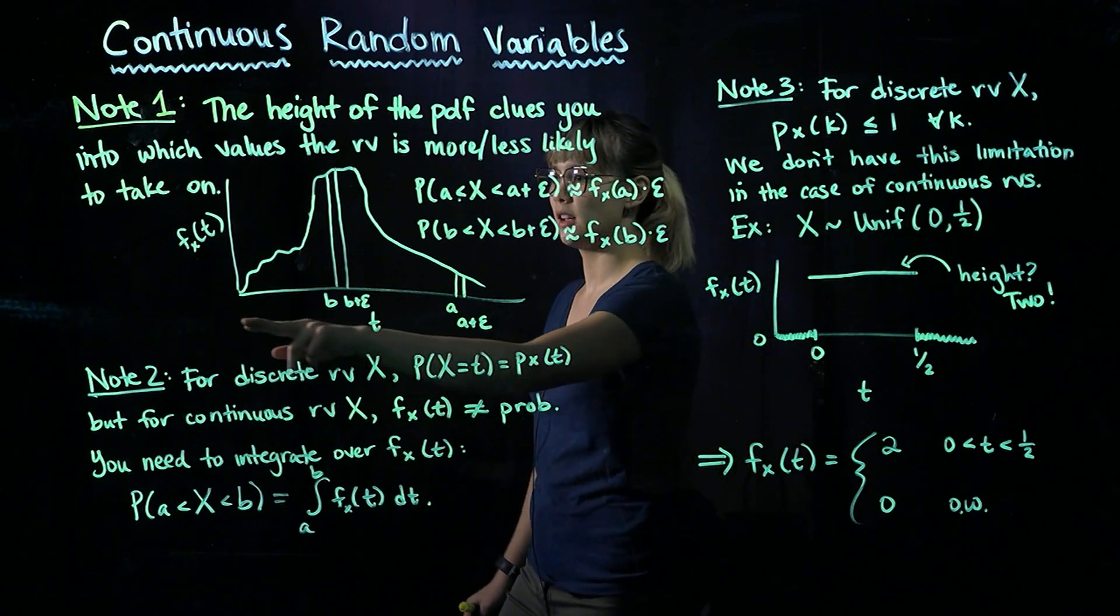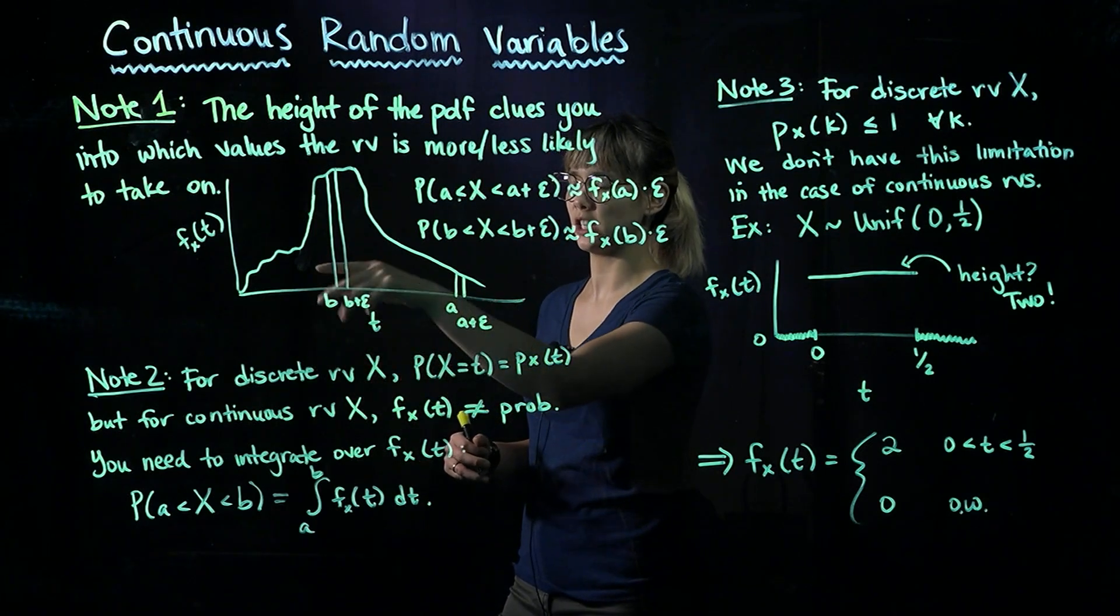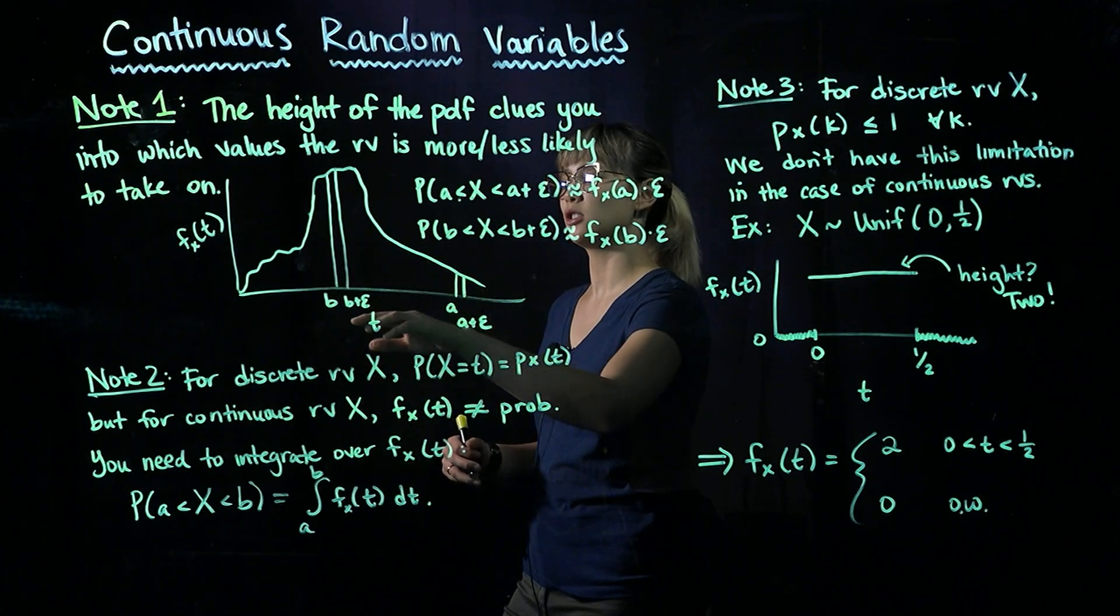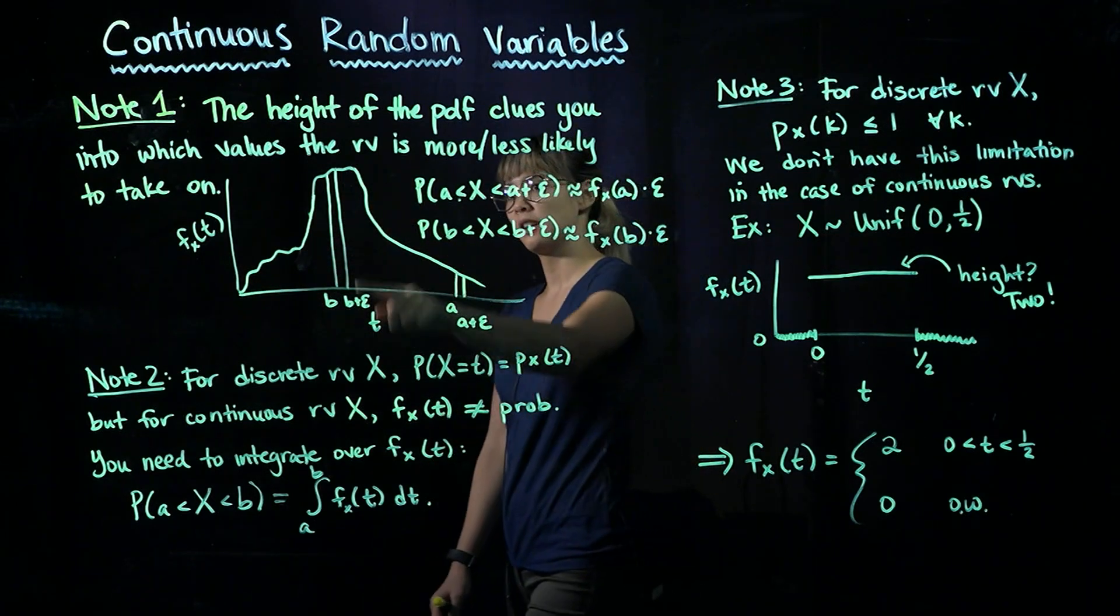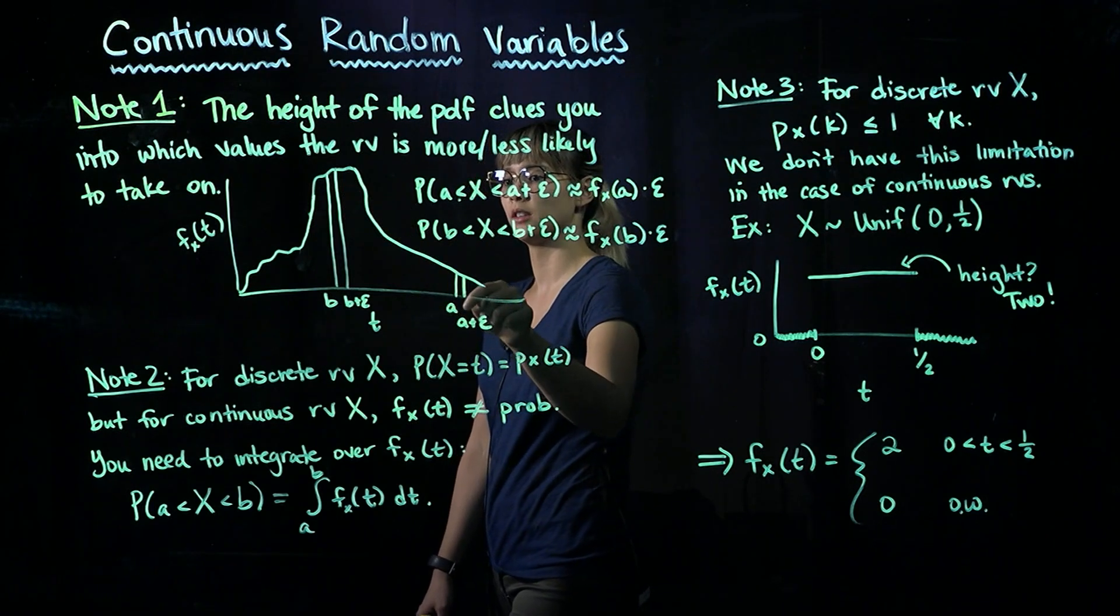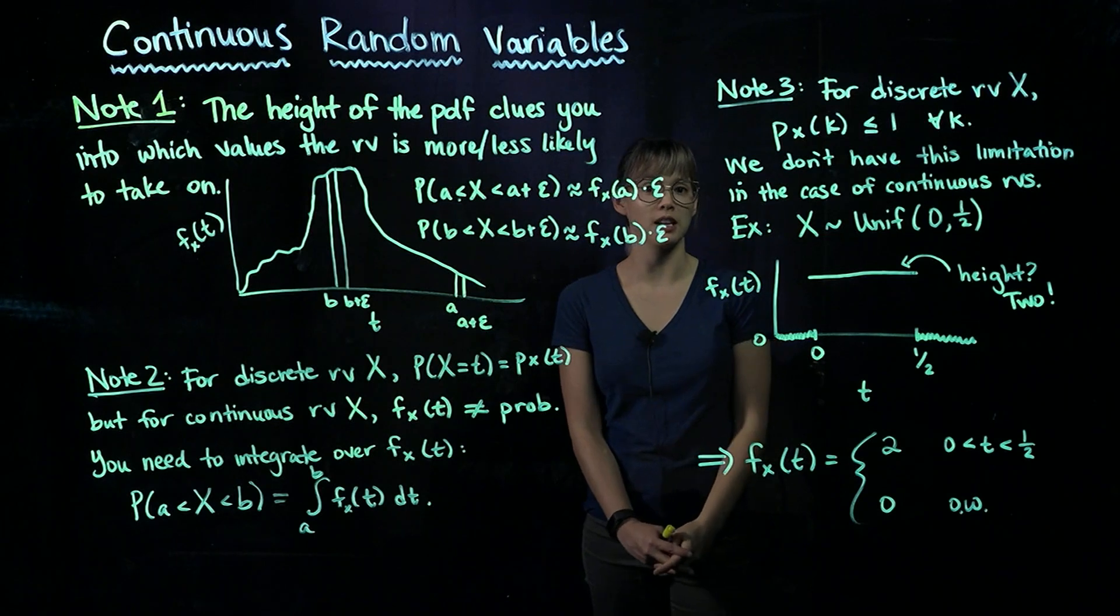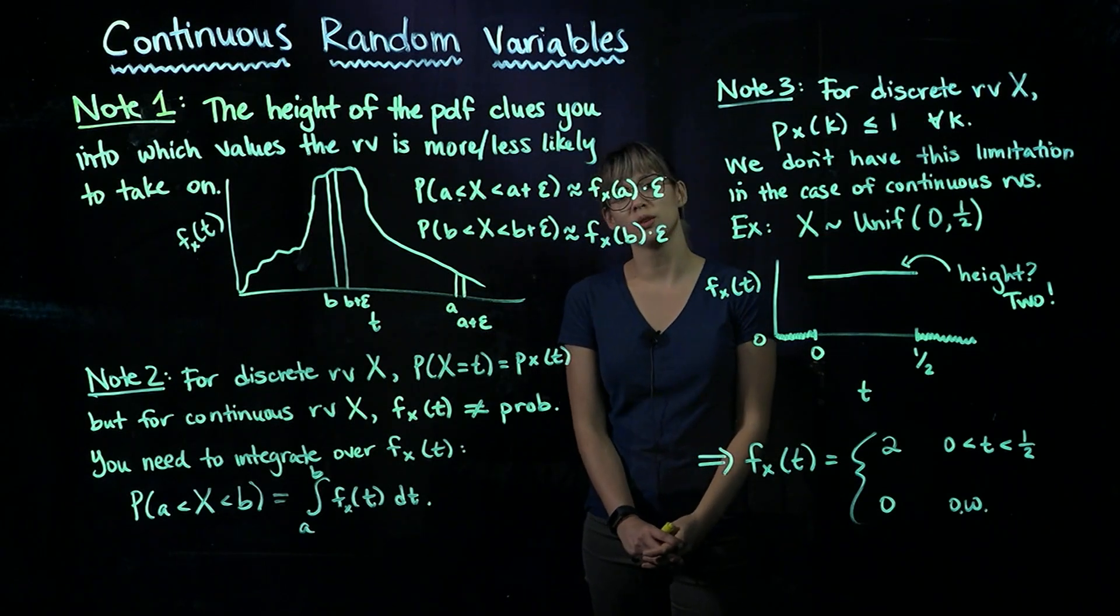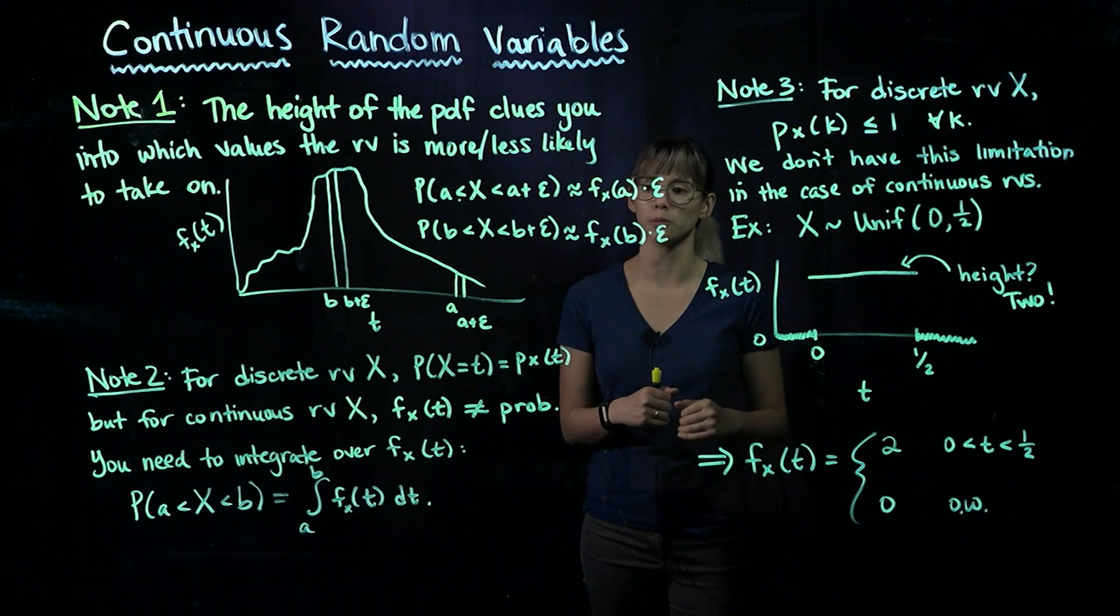here I've drawn a PDF for some random variable, and I just made this up. So here's the PDF. Now, we can notice that the PDF is a lot taller here than it is over here. So what we're going to see is that the height of the PDF can clue us into which values are more or less likely for the random variable to take on.